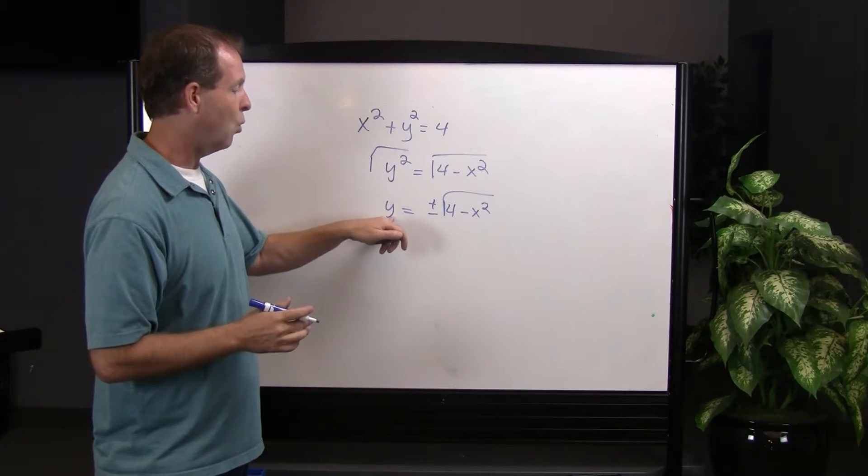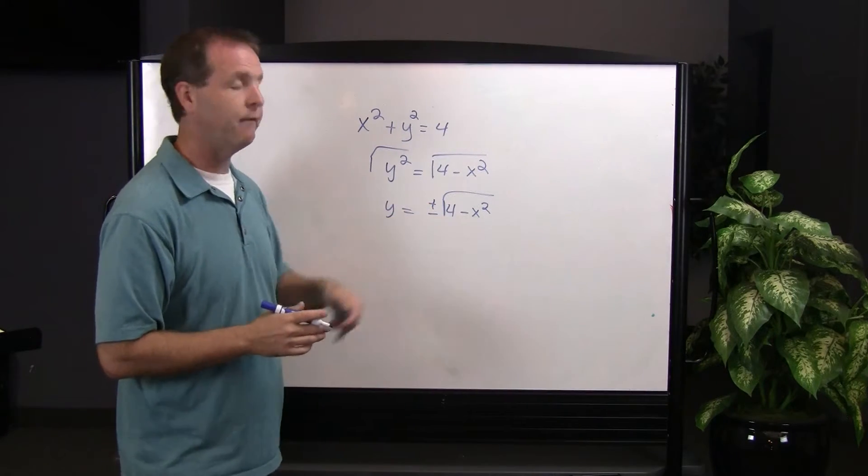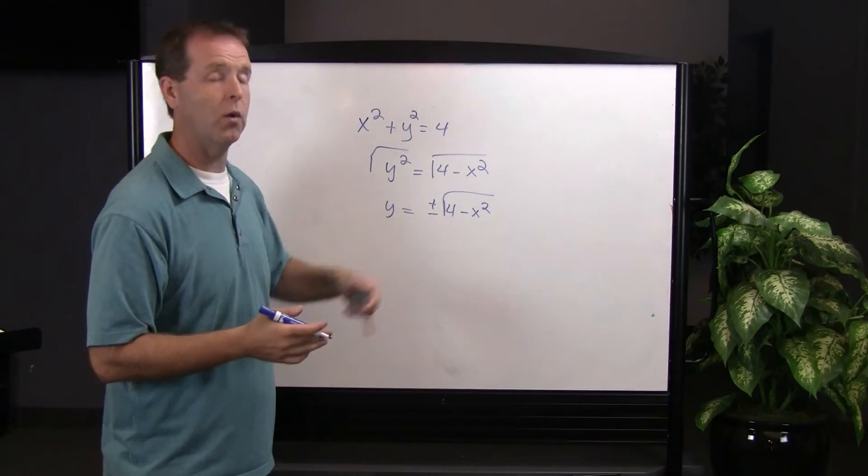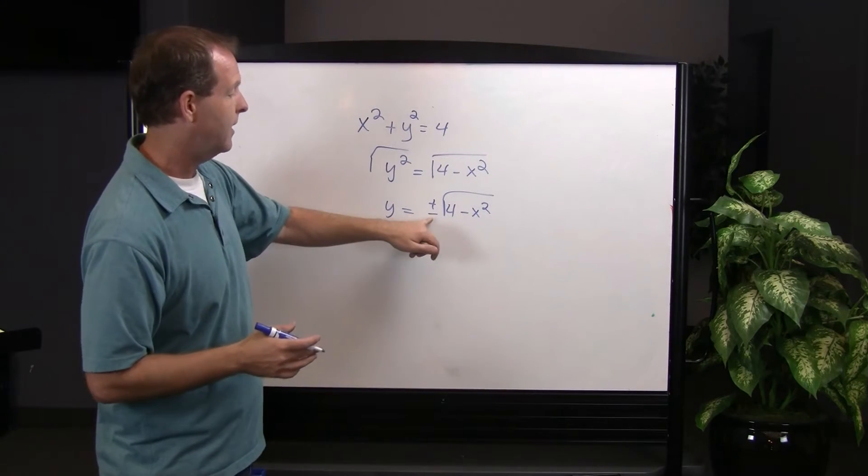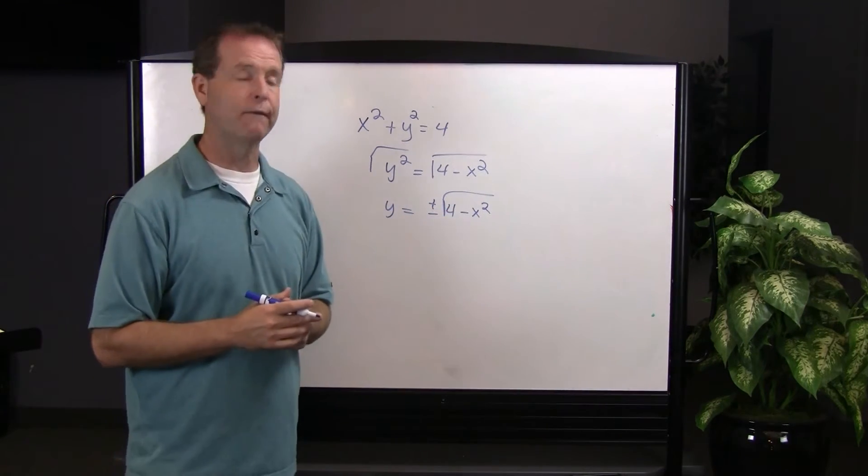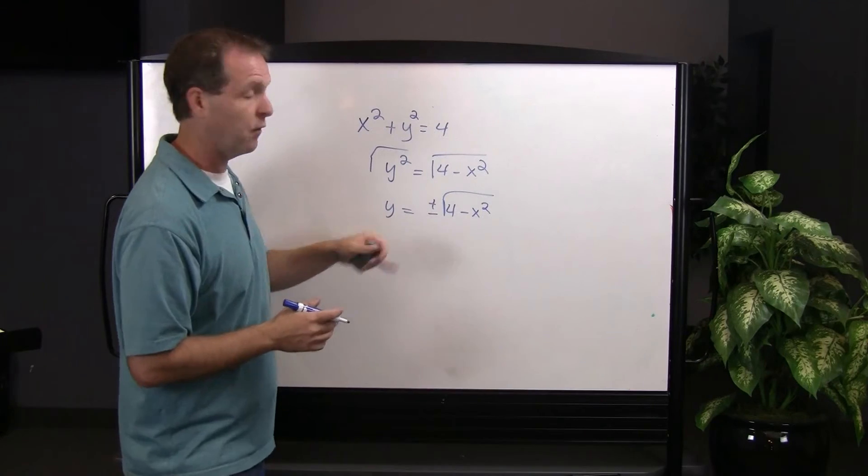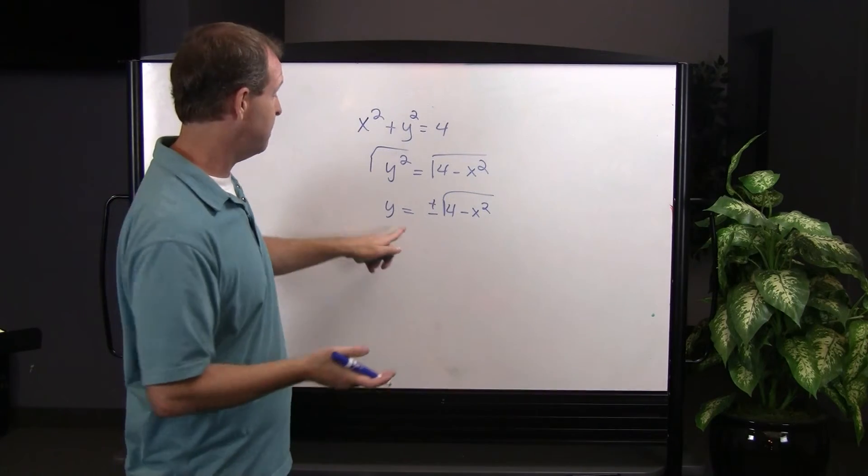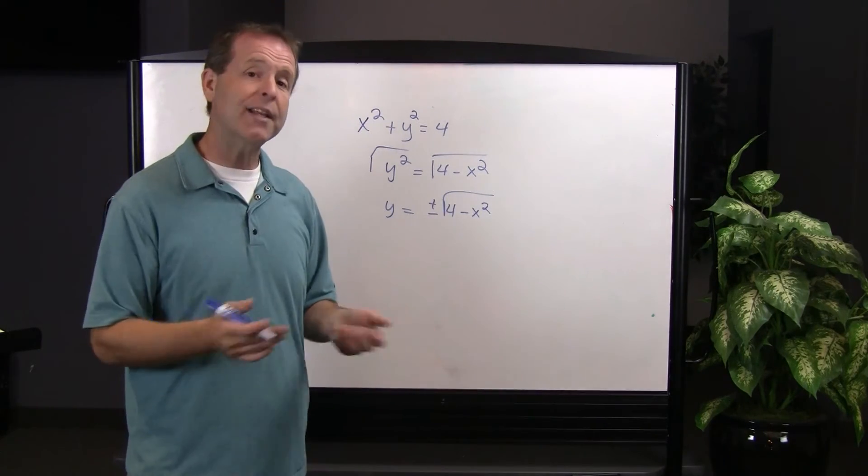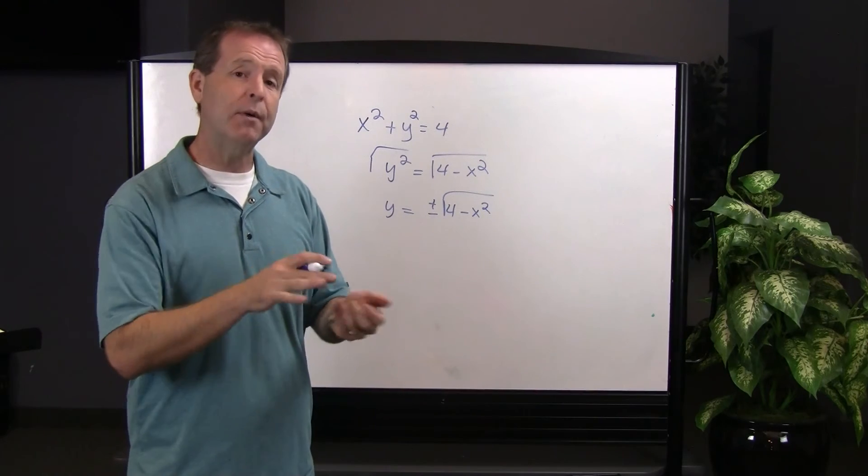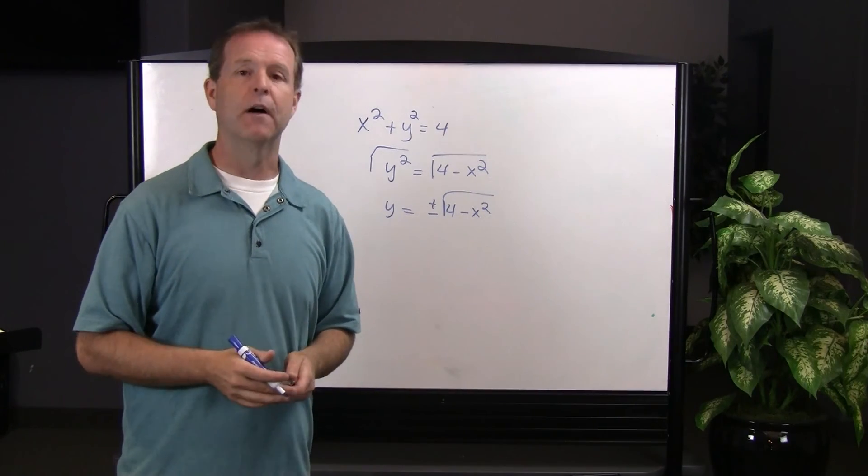In this case, I get y equals positive square root of 4 minus x squared, or negative square root of 4 minus x squared. And so for some values in this particular equation, I get two answers. And therefore, that particular equation is not a function.